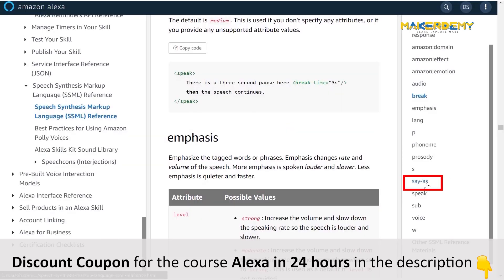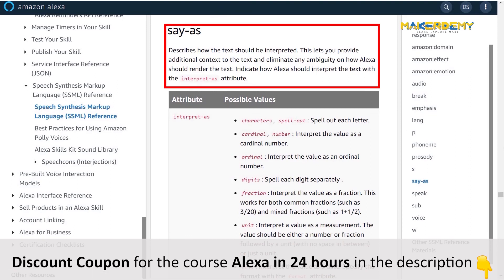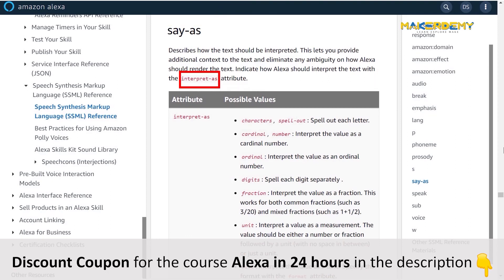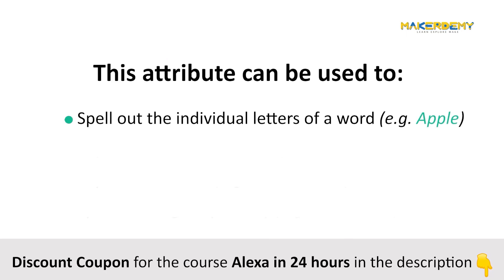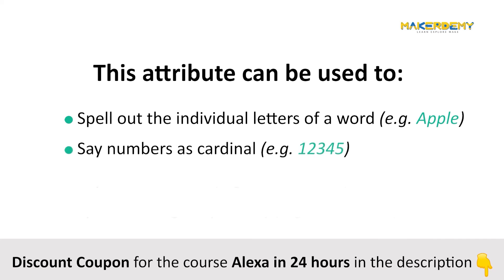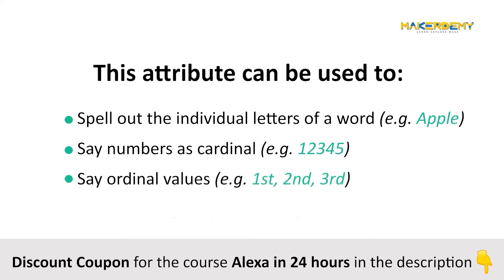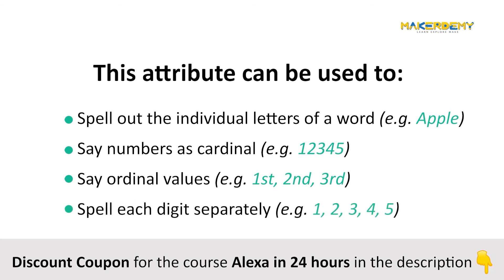Next, click on say-as. Say-as has an attribute called interpret-as. This attribute can be used when you want Alexa to spell out the individual letters of a word — for example, A-P-P-L-E — to say numbers as cardinal, such as 12,345, to say ordinal values like first, second, third, to spell each digit separately as one, two, three, four, five, or to interpret a value as a fraction, such as one third, and so on.